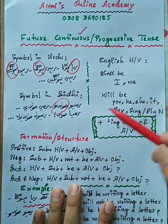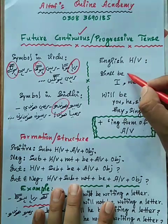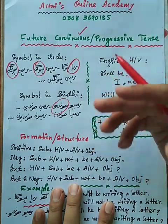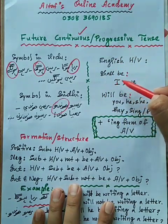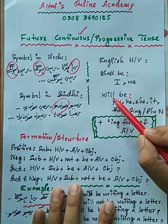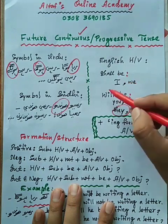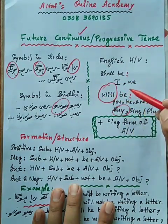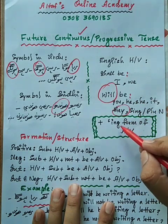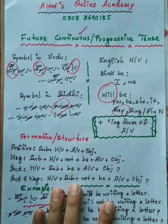If we look at English helping verbs for this tense, we have two: 'shall be' and 'will be'. 'Shall be' is used with I and we. 'Will be' is used with you, he, she, it, they, and singular and plural nouns. Note that although the helping verb consists of two words, it counts as one helping verb. For continuous sentences, an action verb in its -ing form is used.